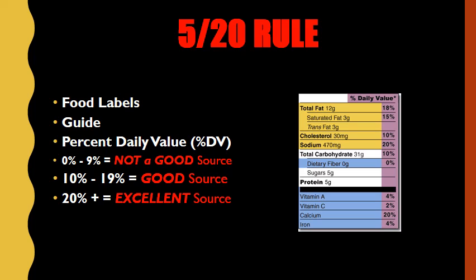Let's dive a little deeper into the 5-20 rule. If a food or beverage item offers anywhere from zero percent to nine percent DV of any particular nutrient, it is not a good source of that nutrient. If it offers 10% to 19% DV, it is considered a good source. And if it offers 20% DV or greater, it is considered an excellent source of that particular nutrient.